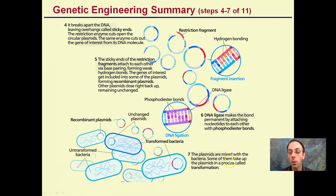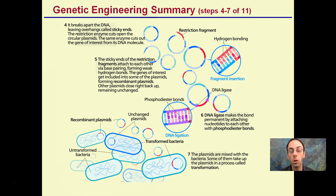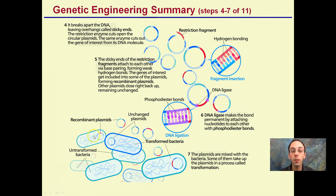The plasmids are mixed with bacteria, and some of them take up the plasmids in a process called transformation — that should sound familiar. Many of these terms come back together in this summary of genetic engineering. The unchanged plasmids don't have the red marker, while the recombinant plasmids do. Both unchanged and recombinant plasmids can be taken up by bacteria cells.